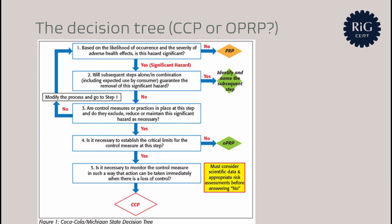Step two: if the hazard is significant, the next question is whether there is a subsequent step in the process that guarantees removal of the hazard. If so, we jump to that step for the analysis. If not, the next question is whether there are controls in place at this step to address the hazard. If so, is it necessary to have critical limits for the control measure? No critical limits means it is an OPRP, not a CCP. If there are critical limits, we ask one more question: is it necessary to monitor the control measure so that action can be taken immediately if the control fails? If so, then we have a critical control point.